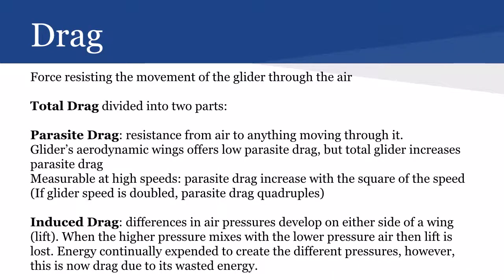Drag is the force resisting the movement of the glider through the air. Total drag is made up of two parts. There's parasite drag, which is the resistance from air to anything moving through it. The glider's aerodynamic wings offer low parasite drag, but the total glider increases parasite drag, since not all parts of the glider are aerodynamic. Parasite drag is more measurable at high speeds because it increases with the square of the speed — so if the speed of the glider is doubled, parasite drag is quadrupled. At launch, speeds can be upwards of 15 miles per hour, so parasite drag can be pretty noticeable.